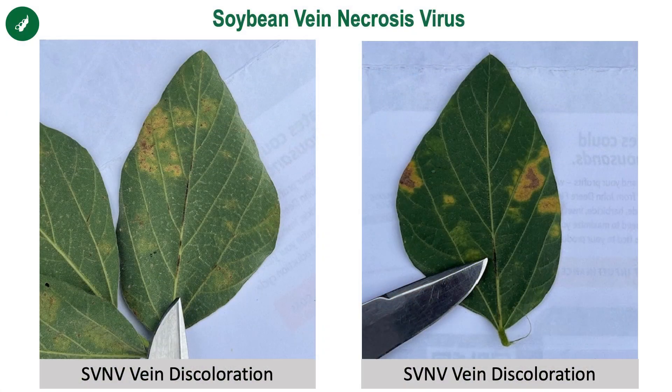Another differentiator between soybean vein necrosis and brown stem rot or sudden death syndrome is the backside of the leaf. If you flip the leaves over that are infected with soybean vein necrosis, the veins themselves oftentimes show more of a black or brown discoloration. So just some things to look for, because soybean vein necrosis is not something we see on an annual basis.